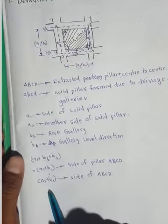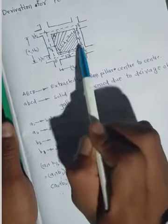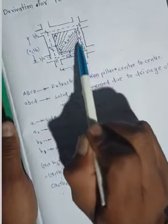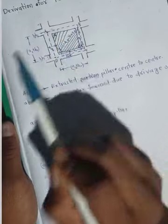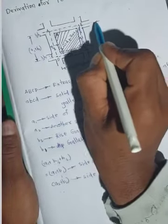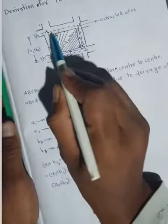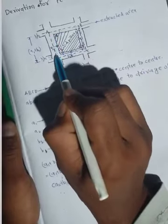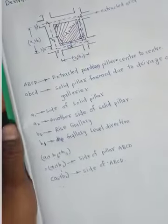The other side is a2 plus b2. From the figure, the area of the bigger ABCD and the smaller ABCD — the area lying between these two squares represents the extracted area. We have to find out the amount of area extracted.